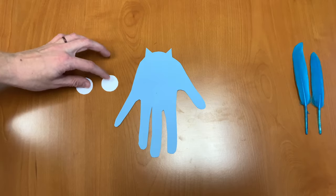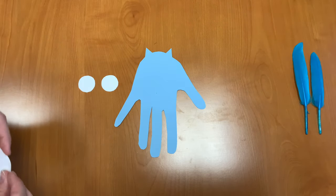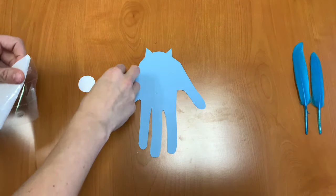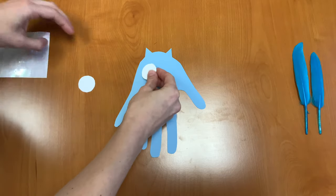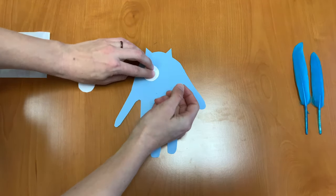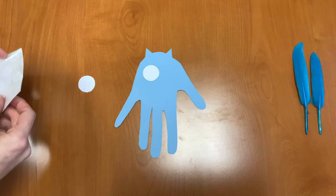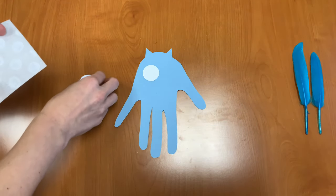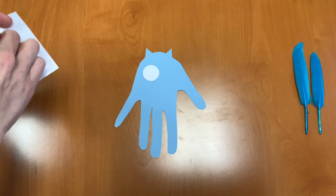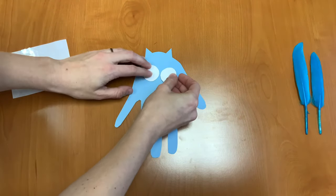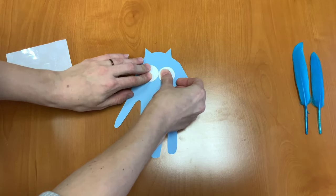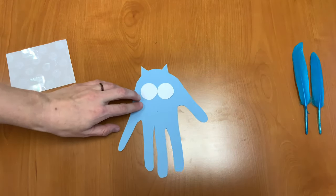Alright, I have my eyes cut out. Now I'm going to attach them using some glue dots. So we'll put one here. And we'll put one right next to it, almost so that they're touching. Perfect.